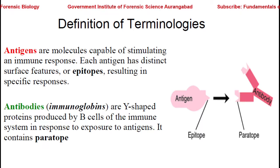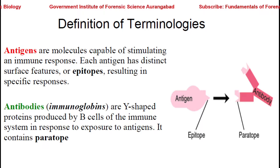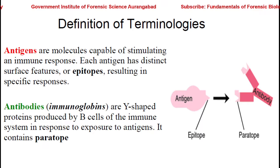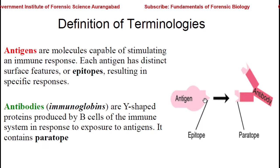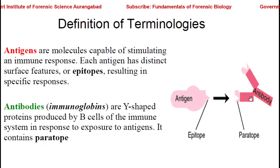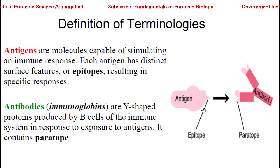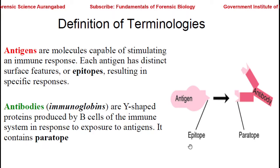Antibodies, also known as immunoglobulins, are Y-shaped protein structures produced by the B cells of the immune system in response to exposure to an antigen. This antibody contains a region called a paratope which recognizes the epitope of the antigen. The antigen has an epitope — the antigenic determinant — while the small part of the Y-shaped antibody that actually interacts with the epitope is called the paratope. The paratope interacts with the epitope, making this a specific reaction.